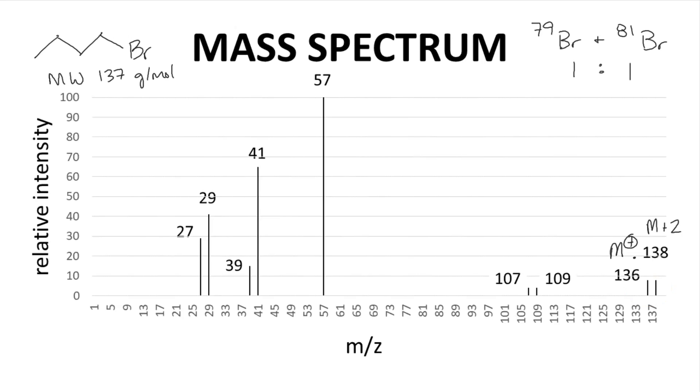As we look across the rest of the spectrum, these weak peaks at 107 and 109 show this same 1 to 1 ratio. That is a sign that these fragments also contain bromine.